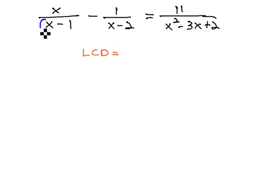While we can clearly see the first factor is x minus 1, the second fraction has an x minus 2, it's not as obvious what factors are in the last denominator. Let's factor the denominators so that we can know what they are.